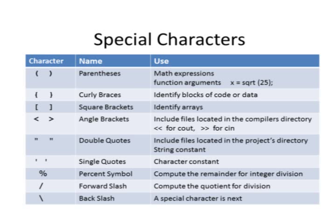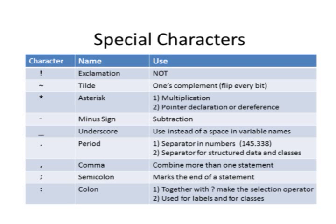The percent sign computes a remainder for an integer division. The forward slash computes a quotient for division, or if you're using floating point values, it's the full quotient including the decimal places. The backslash is a special character used for escape sequences inside character strings. The exclamation mark is a NOT. The tilde is a ones complement that flips every bit. The asterisk is used for multiplication and pointer declaration or dereference. The minus sign is for subtraction. The underscore can be used like a pretend space. The period is a separator in numbers like 145.338, or a separator for structured data and classes.